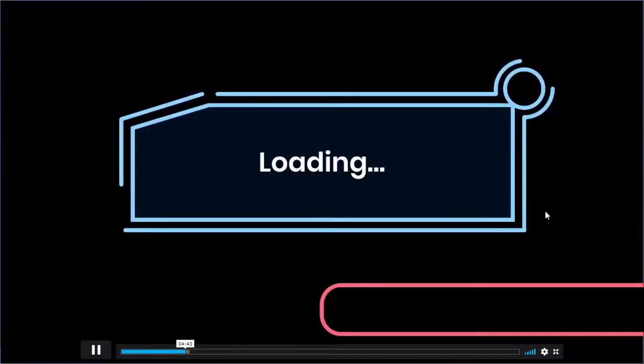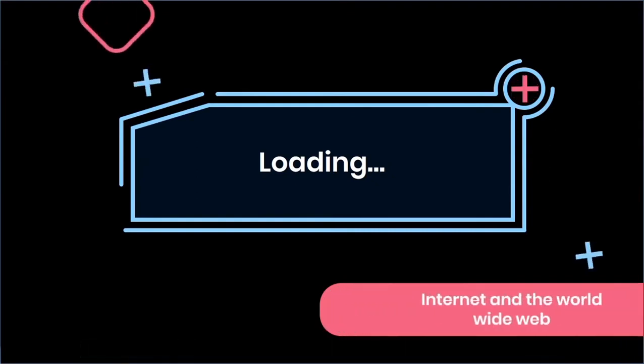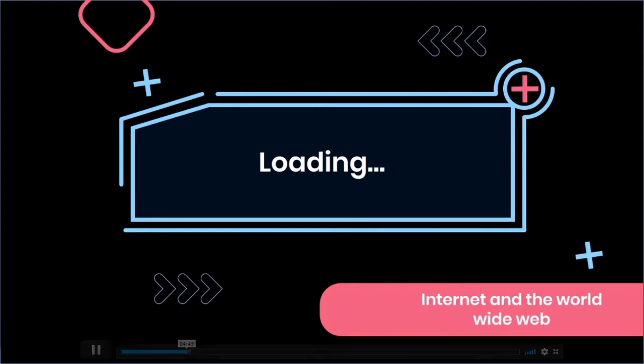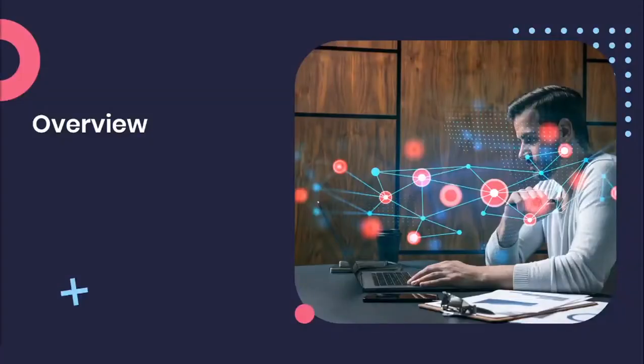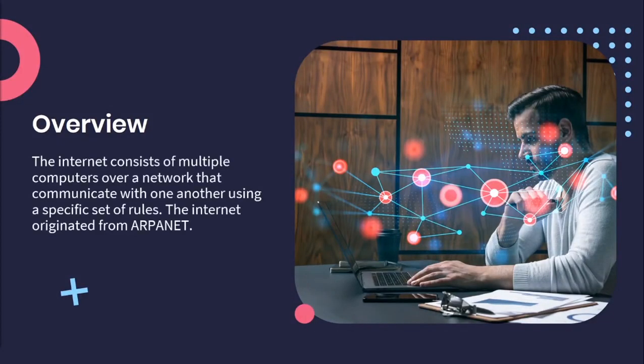Now for our very first topic: the internet and the world wide web. The internet consists of multiple computers, otherwise known as devices, over a network that communicate with one another using a specific set of rules. We will be covering the different kinds of architectures and topologies when it comes to networking. The internet also originated from a program called ARPANET, which was initially a defense program by the US government. Back then the internet was never available for public use until today.